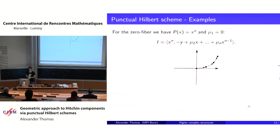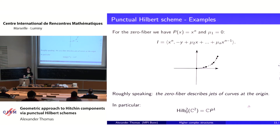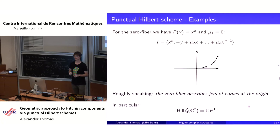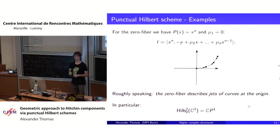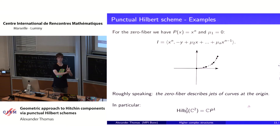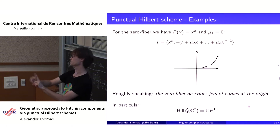Roughly speaking, the zero fiber describes something like jets of curves at the origin. In particular, the zero fiber for the two-point Hilbert scheme is the following: you have one point at the origin and the other point collapsing to the origin. The extra information the Hilbert scheme retains is just the direction from which this particle comes — so this is just CP¹, the space of directions in C².